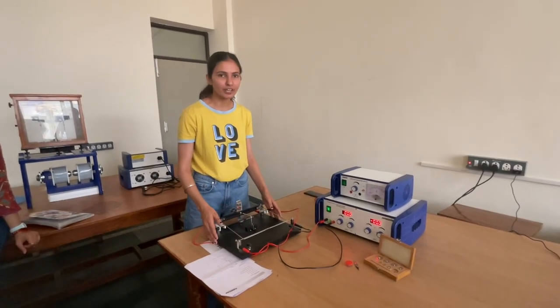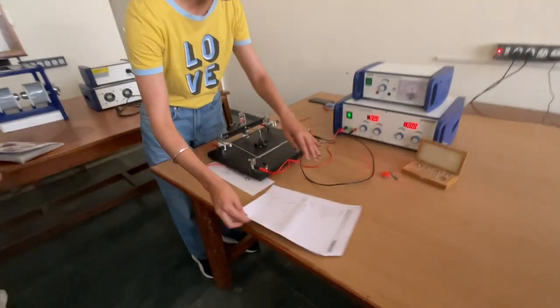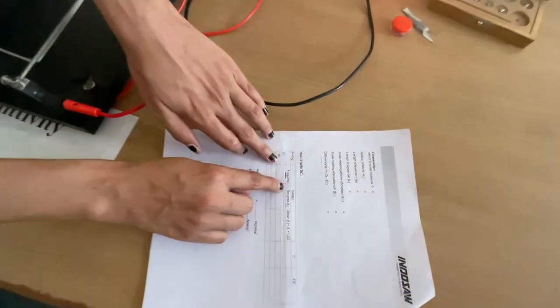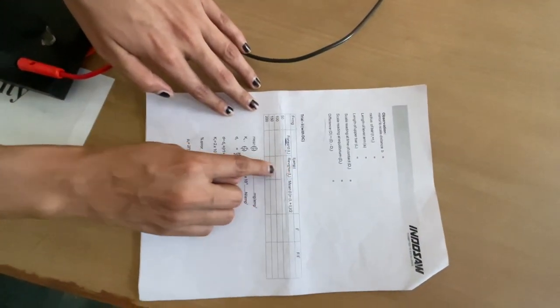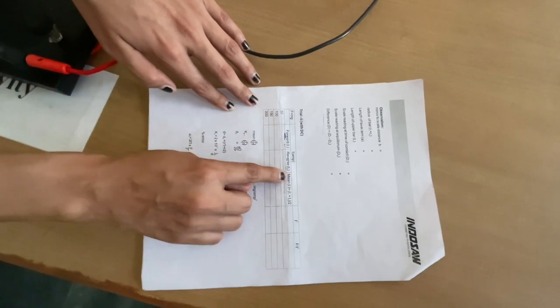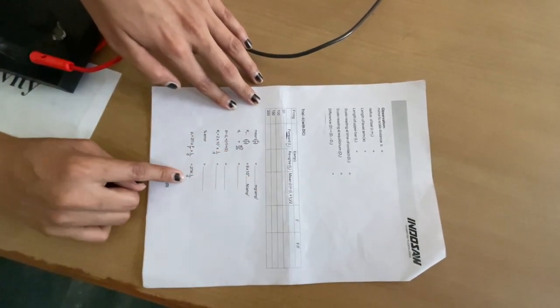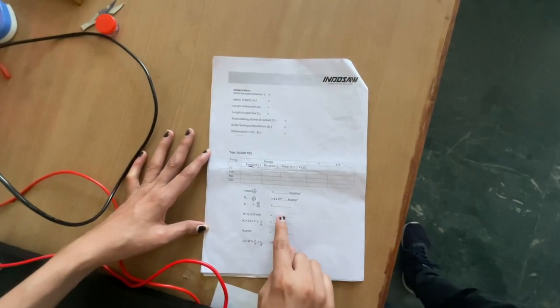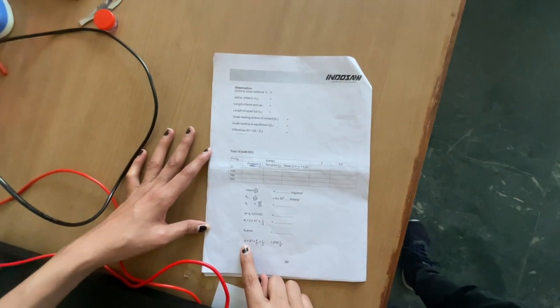Then, I1 and I2 values will be tabulated. This is the observation table. I1 is for forward bias and I2 for reverse bias for different weights. Then, we will take the mean for further calculation. In this way, we will determine the permeability of free space. Thank you very much.